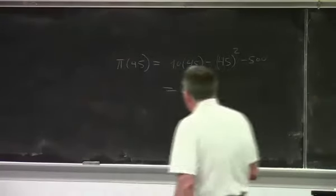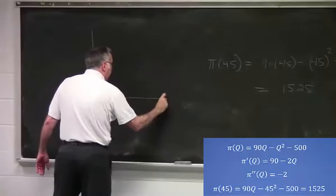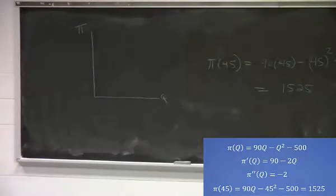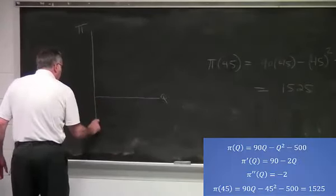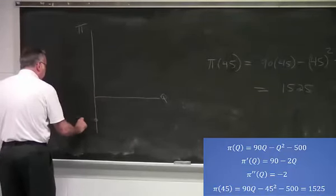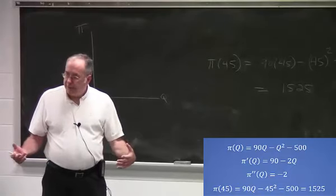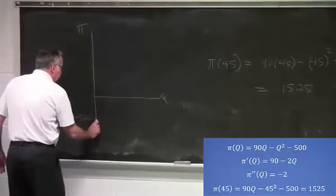Let's look at the graph of this. Here is output. Here is profit. Notice, here's our objective function. It gives us the value of profit for different values of q. Notice it has an intercept of minus 500. It's a quadratic. The coefficient on q squared is negative, so it's going to be an upside down U. At q equals zero, profit is minus 500. That makes sense, because if q is zero, you have no revenue. But you have this fixed cost of 500.